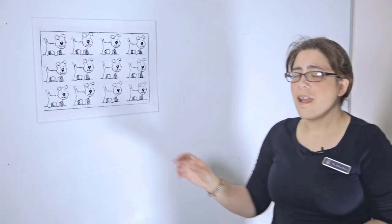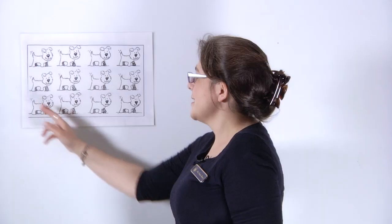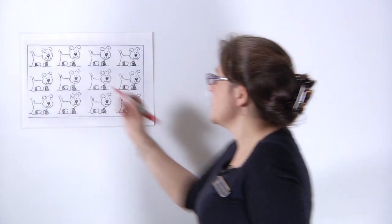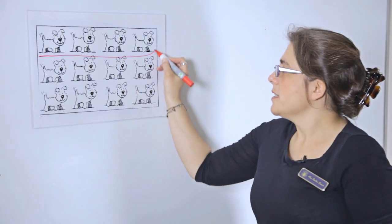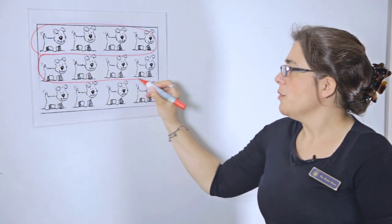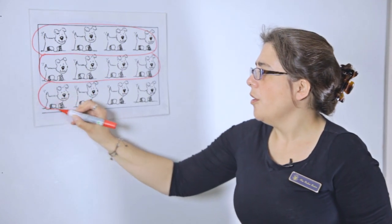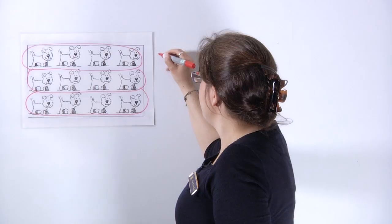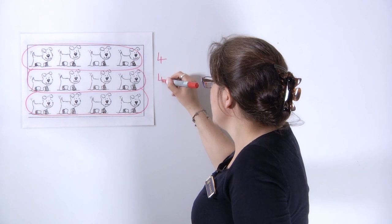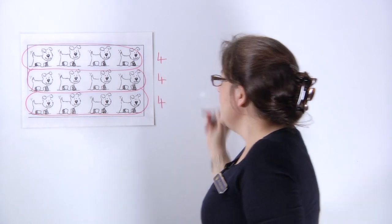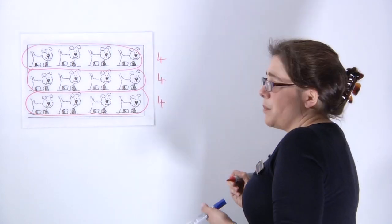And this is where the children's understanding of being able to count in different steps starts to become really important. When objects have been arranged as an array, as these dogs have been, it makes it easier to find different groups. So we can group them this way. And in each of the groups, there's the same number of dogs. There's four in each of the three groups.